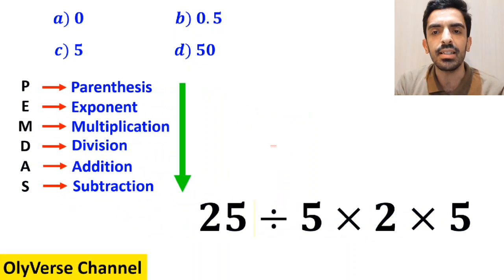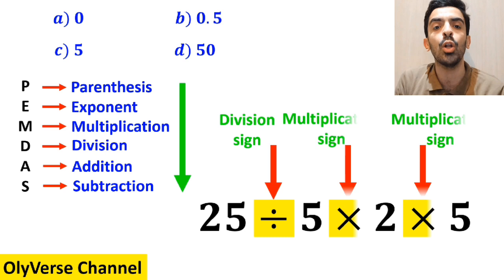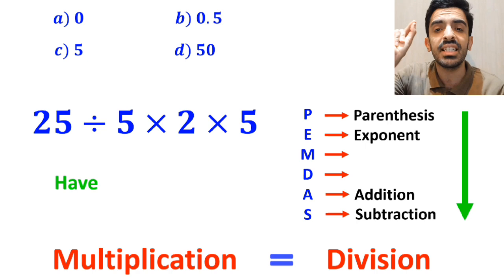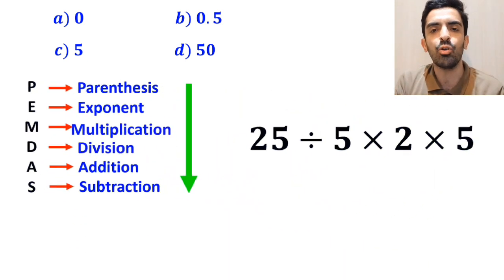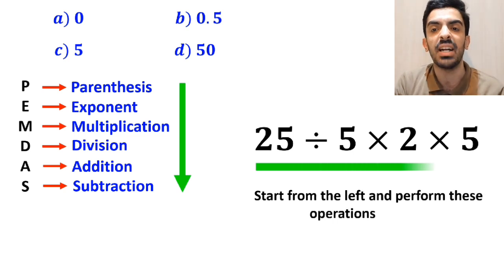Alright, as you can see on the screen, in this expression, we have one division sign followed by two multiplication signs. We must pay close attention that multiplication and division have exactly the same level of priority in the PEMDAS rule. In this situation, the best thing to do is to start from the left and perform these operations in order.